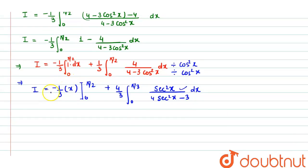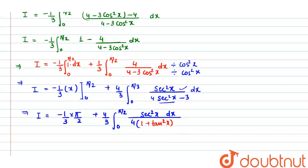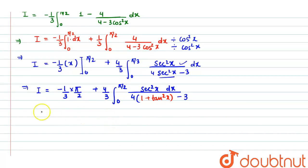Applying the limit to the first term: -1/3 · [x] from 0 to π/2 gives -π/6. For the second integral, plus 4/3 · ∫₀^(π/2) sec²x / (4sec²x - 3) dx. In the denominator I replace sec²x with the identity 1 + tan²x. This makes it straightforward to integrate.